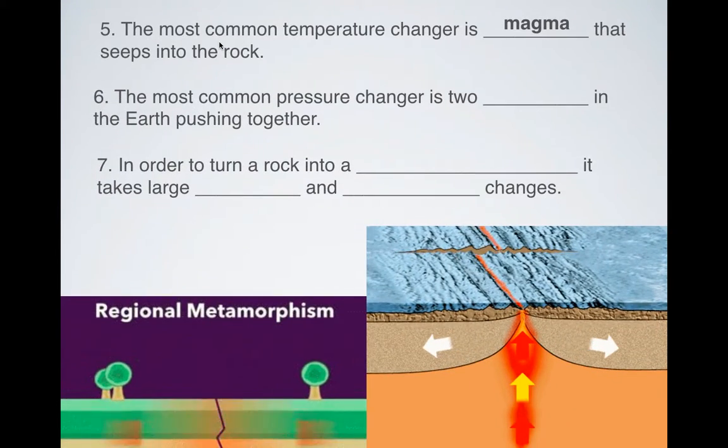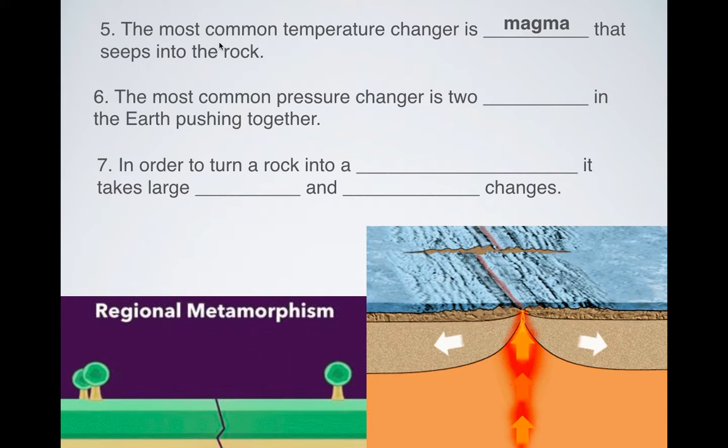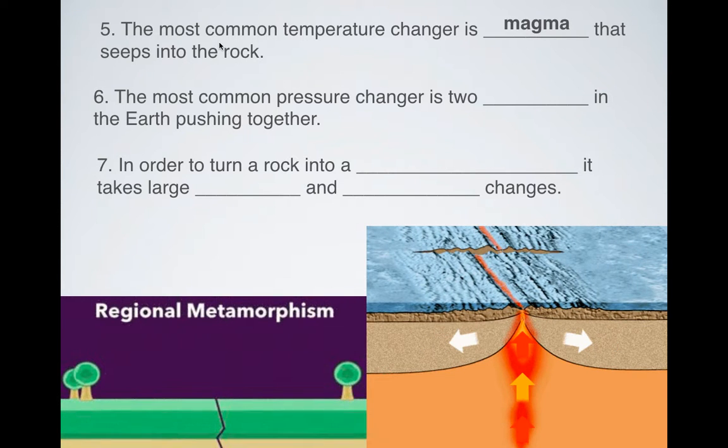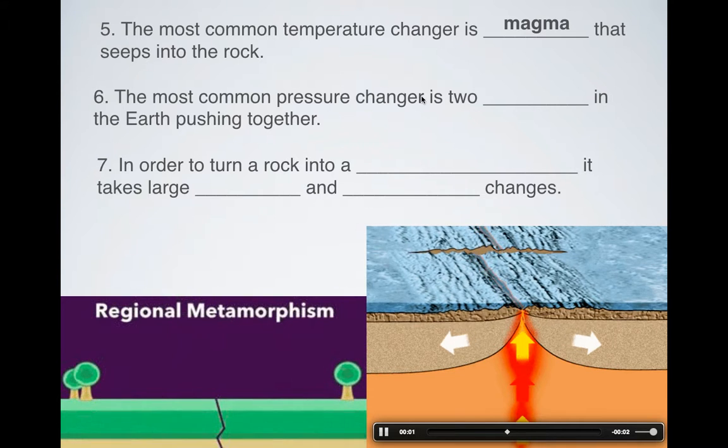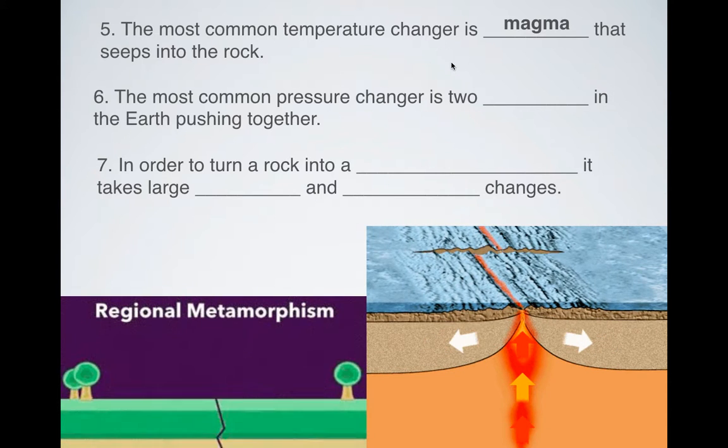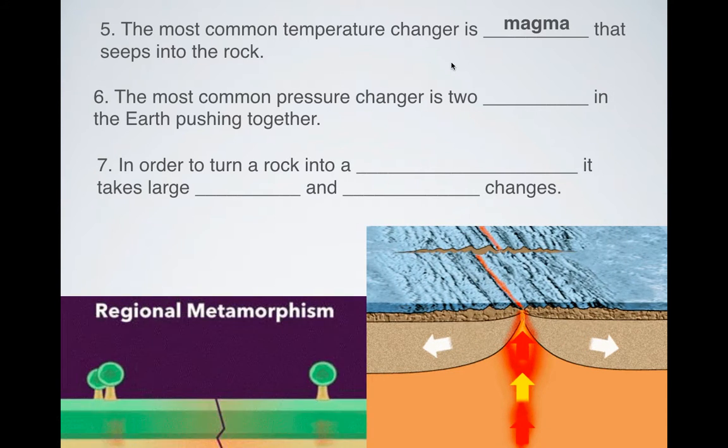Now, how do we turn these things into metamorphic rocks? Well, remember, it says you have to apply heat and pressure. So what is the most common form of heat that you're adding? It is magma, because magma can seep into rocks. And as it seeps into rocks, it starts to heat them up, and sometimes it melts them. Sometimes it just applies a lot of heat, because the magma starts to cool off.